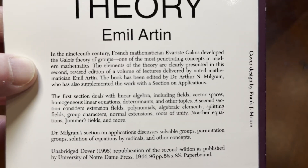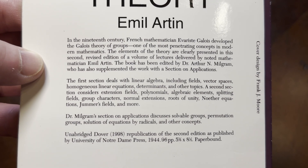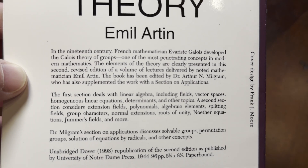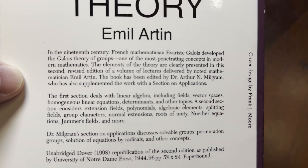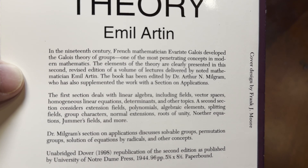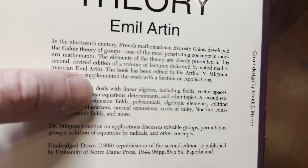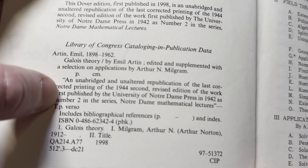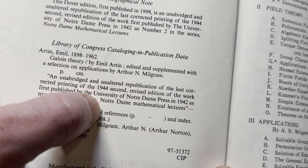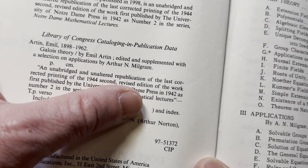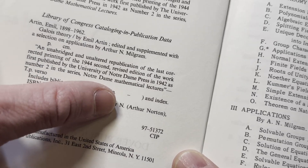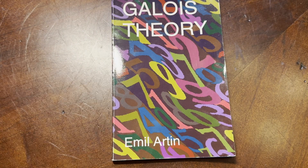In the 19th century, French mathematician Évariste Galois developed the Galois theory of groups, one of the most penetrating concepts in modern mathematics. The elements of the theory are clearly presented in this second revised edition of a volume of lectures delivered by noted mathematician Emil Artin, first published by the University of Notre Dame Press in 1942 as Notre Dame Mathematical Lectures. Notre Dame is a really good school. Anyway, awesome book — take care, keep doing mathematics.